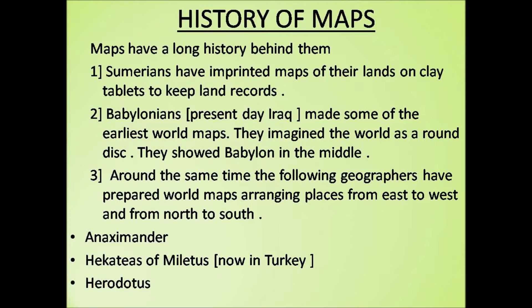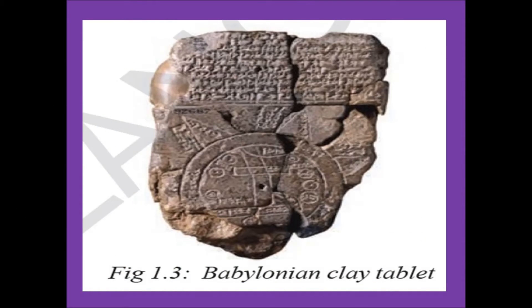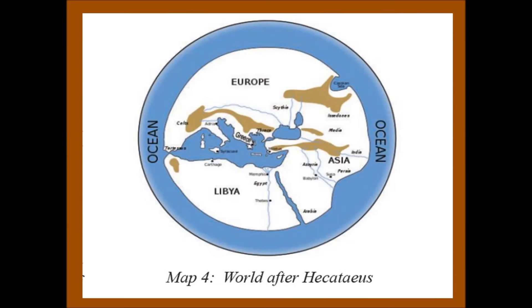They showed Babylon, their city, in the middle. Around the same time, the following geographers prepared world maps arranging places from east to west and from north to south: Anaximander, Hecataeus of Miletus (now in Turkey), and Herodotus. These maps were based on the travel descriptions of many Babylonian travelers and sailors. They placed Greece in the middle of the map and divided the world into three continents: Europe, Libya, and Asia.